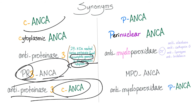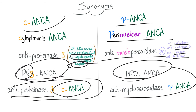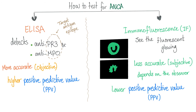Some synonyms: C-ANCA is the same as cytoplasmic ANCA, antiproteinase 3 ANCA, and PR3-ANCA. Proteinase 3 is a 29-kDa neutral serine protease found in azurophilic granules in the neutrophilic cytoplasm. P-ANCA, or perinuclear ANCA, is the same as anti-myeloperoxidase ANCA. However, P-ANCA doesn't have to target myeloperoxidase — it can also target elastase, cathepsin G, lysozyme, and lactoferrin. MPO-ANCA and P-ANCA are essentially synonymous terms for antimyeloperoxidase P-ANCA.